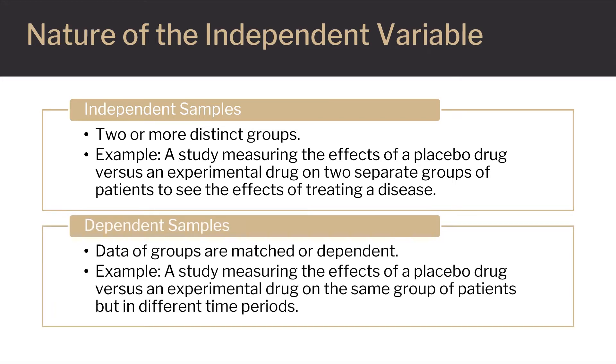An example of a dependent group is a study measuring the effects of a placebo drug versus an experimental drug on the same group of patients but in different time periods. In this example, the two groups that are being studied are the same exact people in each group but at different time intervals.